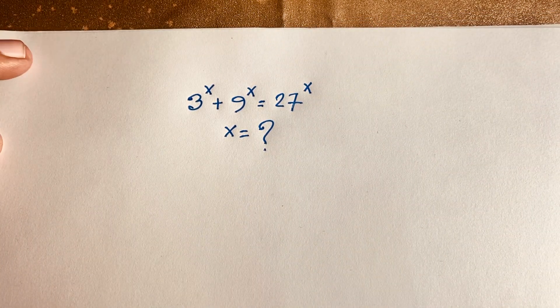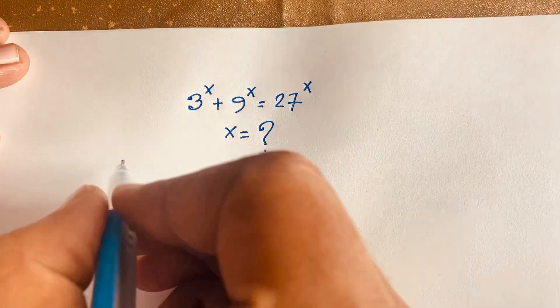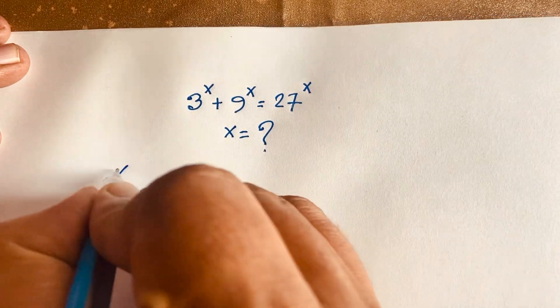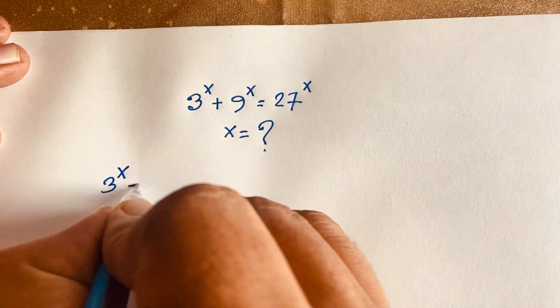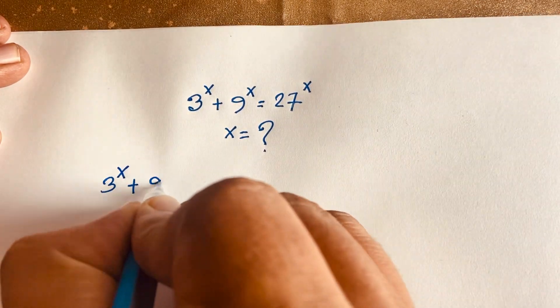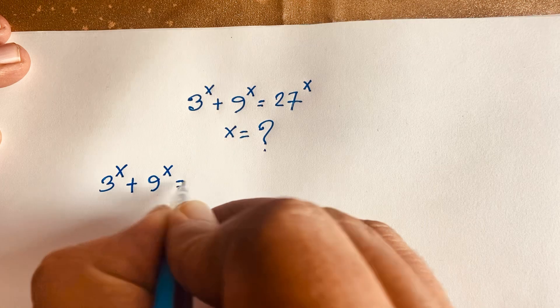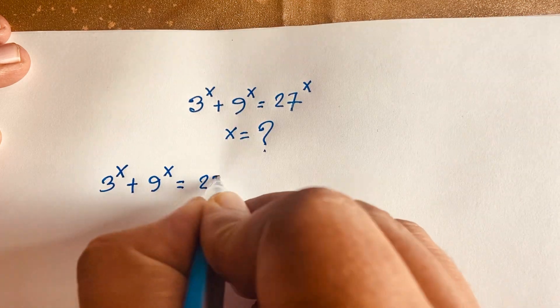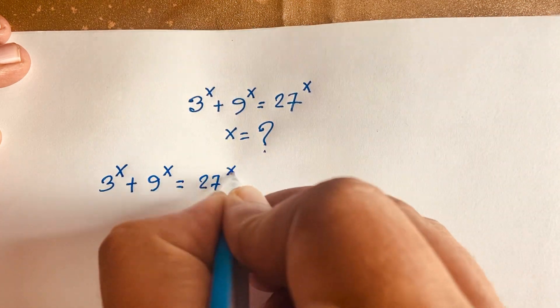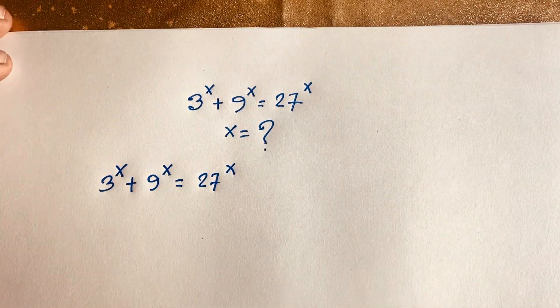Our question is: 3 to the power x plus 9 to the power x is equal to 27 to the power x.